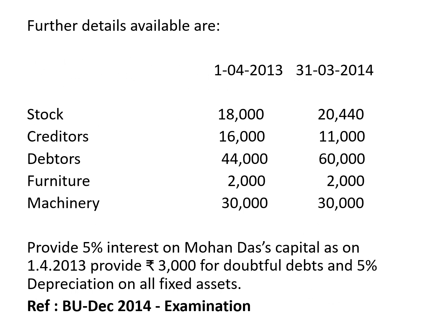Further details available: opening and closing values of various assets and liabilities are given. Balances as on 1st April 2013 and 31st March 2014 represent opening and closing balances. Stock: opening stock 18,000, closing stock 20,440. Opening stock will go to the opening statement of affairs and trading account; closing stock will go to the trading account and balance sheet.